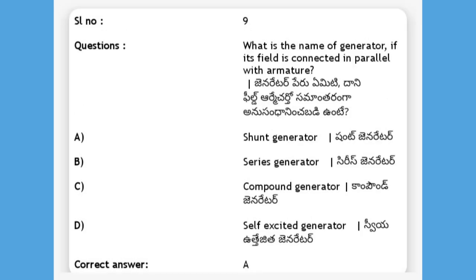What is the name of the generator if its field is connected in parallel with the armature? Options: shunt generator, series generator, compound generator, self-excited generator. The answer is A, shunt generator.